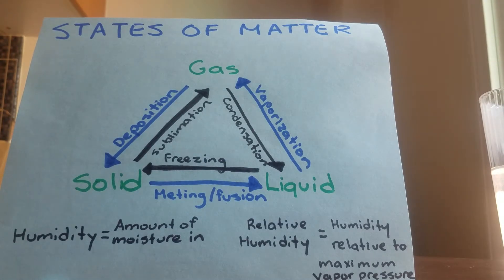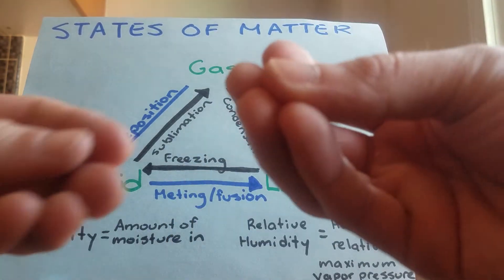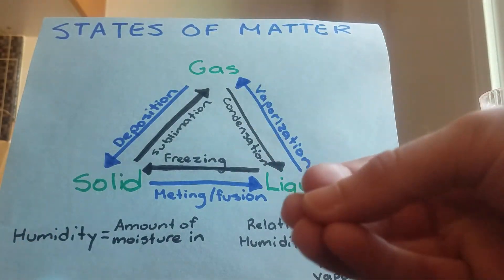Okay, new terms: humidity. This is really important in the water cycle—it's the amount of moisture that's in the air, the amount of actual water vapor that's in the air. And then a new term called relative humidity. This is more important for the lessons in the days to come. Relative humidity is the amount of water vapor in the air relative to what we call the maximum vapor pressure.